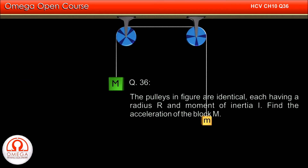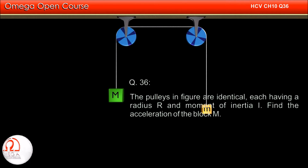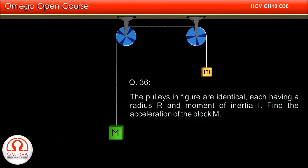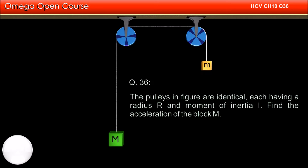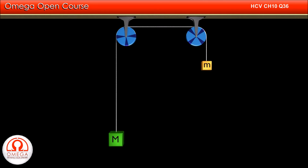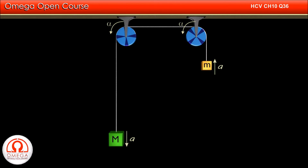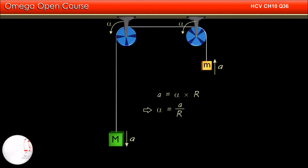The two pulleys are identical, each having radius r and moment of inertia I. Find the acceleration of the blocks. Let the acceleration of the blocks be a and the angular acceleration of the pulleys be alpha. Since the radii of both the pulleys are r, a must be equal to r into alpha, or alpha is equal to a divided by r.